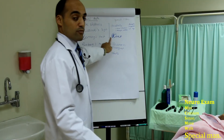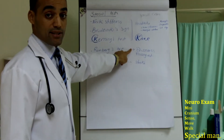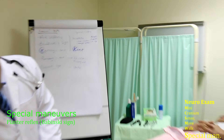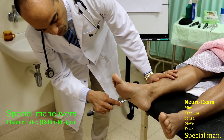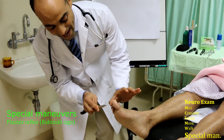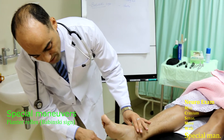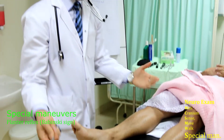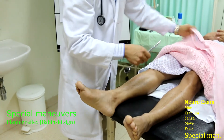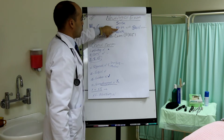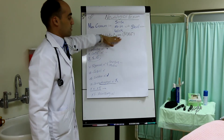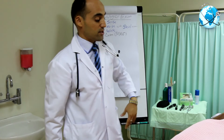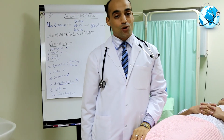Finally, the Babinski sign — a sign of upper motor neuron lesion. Scratch the lateral border of the foot. Normal is no reaction; abnormal is fanning of the toes with dorsiflexion — that's a positive Babinski. Quick review of the mnemonic: MINI CRANIUM — Mini Mental Status Exam, cranial nerves, sensation, motor, walk which is gait and cerebellum, and special maneuvers: Kernig, neck stiffness, Brudzinski. Thank you so much.